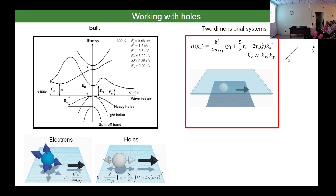Due to the strong spin-orbit, it's all about j. For the conduction band, l equals 0, so j equals s — you practically have the spin. For the valence band, l equals 1, so what we call spin is actually j. The pseudo-spin is not the real spin; it has contributions from both spin-up and spin-down components.